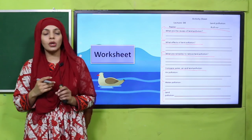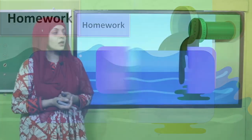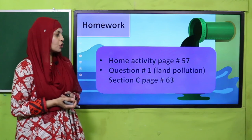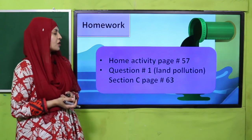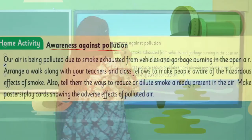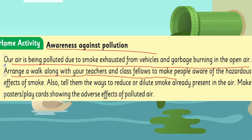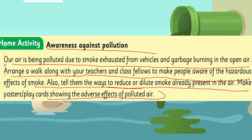For your homework, do home activity number 57, question number one on land pollution, given on page number 63. This activity is about raising awareness against land pollution: our air is being polluted due to smoke from vehicles and garbage burning in the open. Arrange a walk along with your teachers and classmates to make people aware of the hazardous effects of smoke. Also tell them ways to reduce or dilute smoke already present in the air. Make posters and placards showing the adverse effects of land-polluted air.